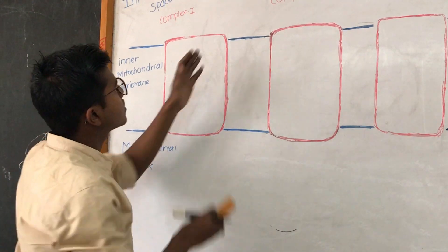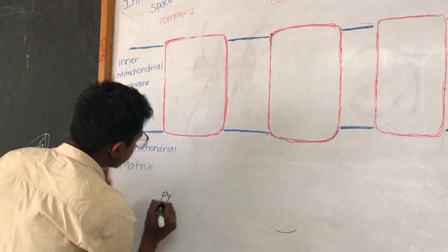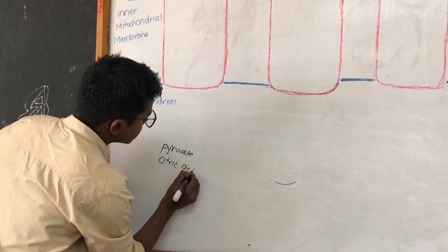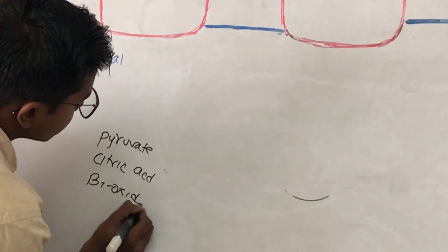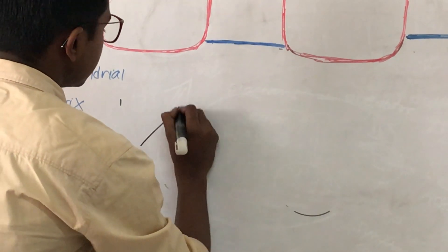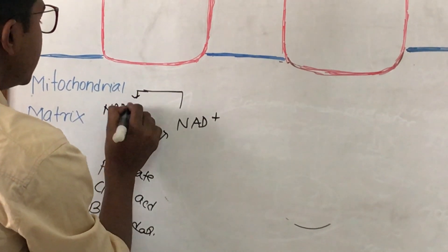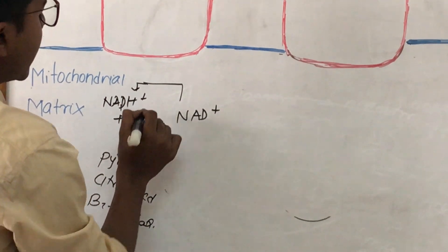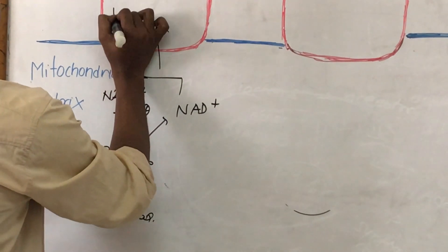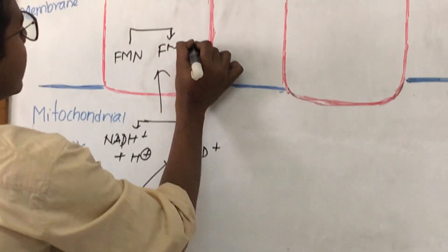I will deal with the names after going through the various complexes. First, there is a substrate in the form of pyruvate, citric acid cycle substrates, or beta oxidation electrons. These transfer electrons to NAD⁺, which is changed into NADH. NADH then transfers its electron to FMN, and FMN is changed into FMNH₂.